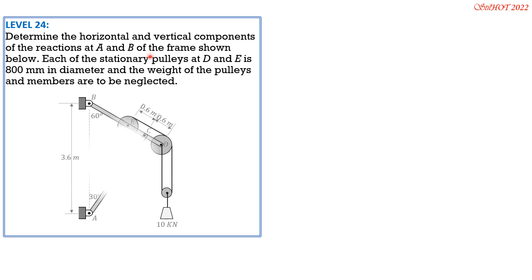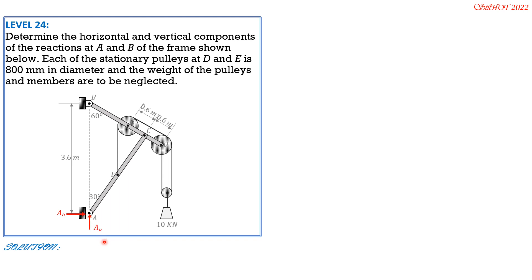Determine the horizontal and vertical components of the reactions at A and B of the frame shown. Each stationary pulley at D and E is 800 mm in diameter; weights of pulleys and members are neglected. Observe that members BC and AC are perpendicular to each other because of the given angles of 30 and 60 degrees. Assume component directions A_H, A_V, B_H leftward, and B_V vertical.